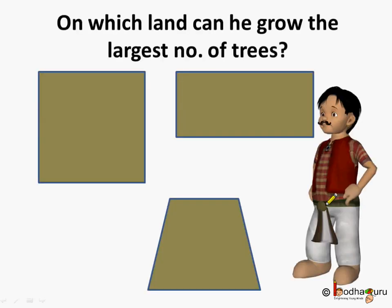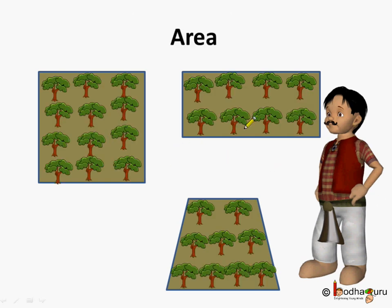This is Mahanath Ram. He wanted to buy land for farming. He saw many different lands of different shapes. He wanted to know which land he should buy so that he could grow the maximum number of trees on his land. How can he find this? Well, if the land were of these shapes, then where all could he grow the trees? He could grow in the colored region — it is the region which is bounded by the shape.